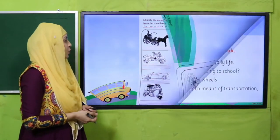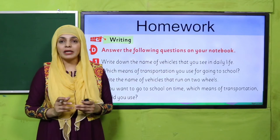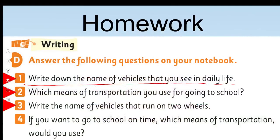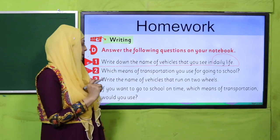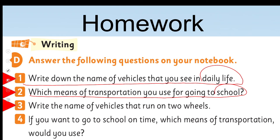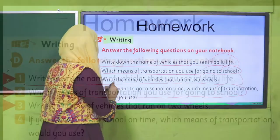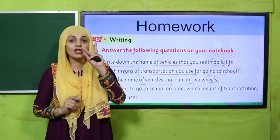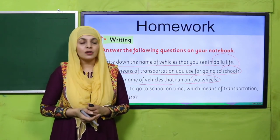I hope everybody has done it. Now let's move to the homework. All students, note your homework. In your book, there are three questions on the writing practice page that you need to do in your notebook. First: write down the names of vehicles that you use in daily life. Second: which means of transportation do you use for going to school — write its name. Third: write the names of vehicles that run on two wheels — that is a bicycle and a motorbike.